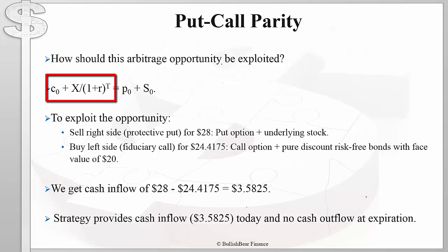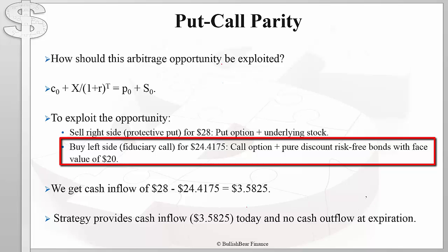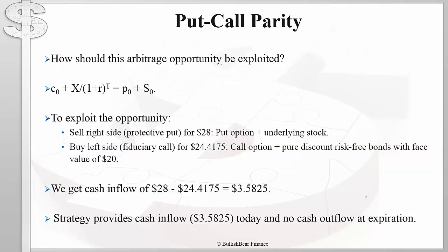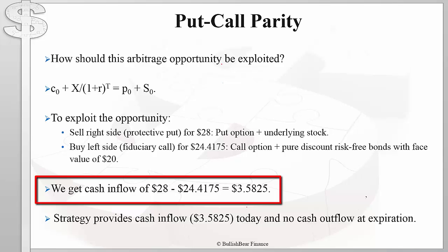Since the left side of the equation is cheaper, we buy the left side for $24.4175. The left side of the equation is also known as a fiduciary call, which means we buy the call option and invest in a pure discount risk-free bond with a face value of $20. We do this so that at option maturity, we get $20 as the payoff from the risk-free bond. If we follow this strategy — sell the protective put and buy the fiduciary call — we get a cash inflow equal to $3.5825.